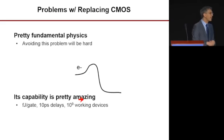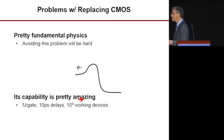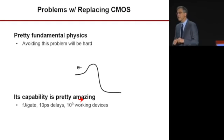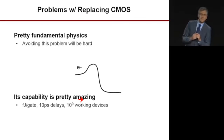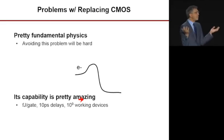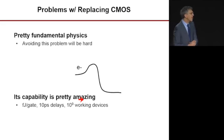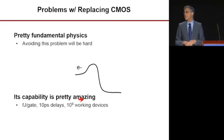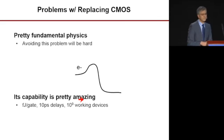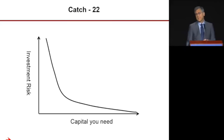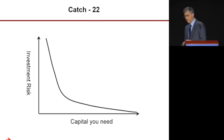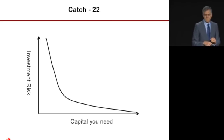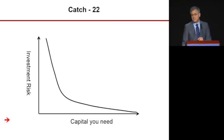The second problem is economic. Even though CMOS isn't scaling like we want, it is amazingly capable: we can build gates that dissipate femtojoules of energy per evaluation, evaluate in picoseconds, and build a billion of them on a chip and expect them all to work. That leads to the perfect catch-22 for a new computing technology — shown on a graph of investment risk versus capital required, any viable replacement technology is simultaneously high investment risk and requires massive capital, placing it far outside the feasible curve.